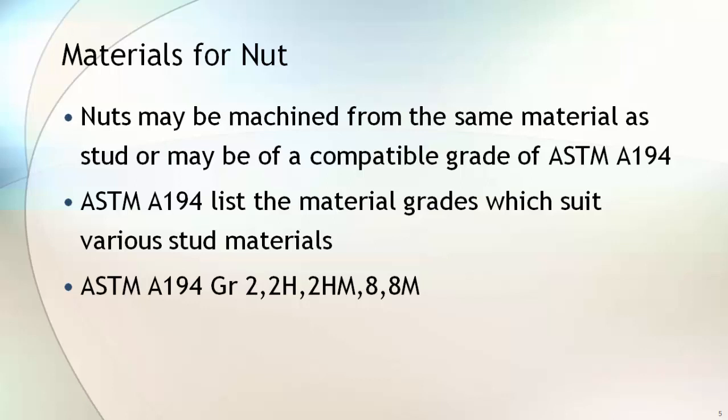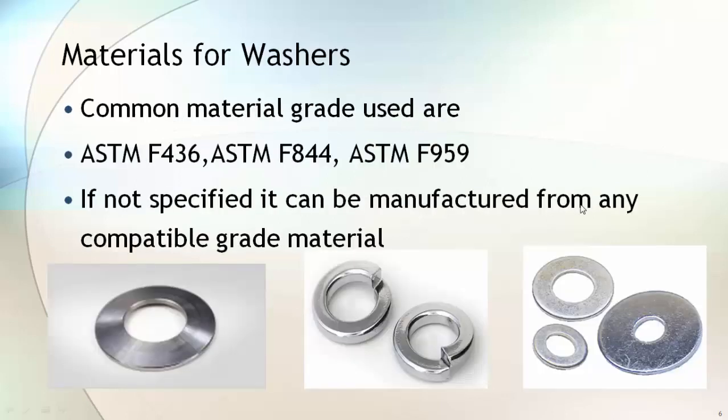Most widely used material grades are ASTM A194 grade 2, 2H, 2HM, 8, and 8M. Common material grades used for washer manufacturing are ASTM F436, F844, and ASTM F959.